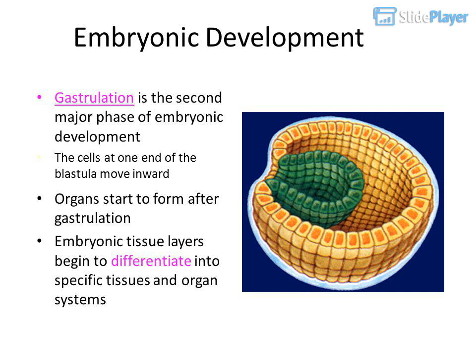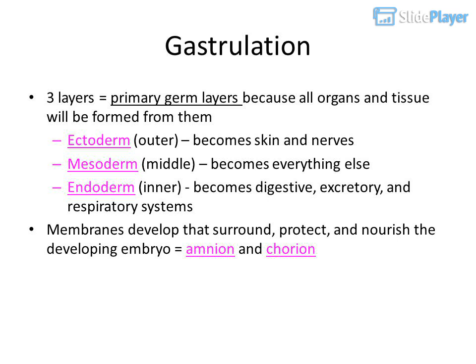Gastrulation is the second major phase of embryonic development. The cells at one end of the blastula move inward and organs start to form. After gastrulation, embryonic tissue layers begin to differentiate into three primary germ layers, from which all organs and tissues will form: ectoderm (outer) becomes skin and nerves; mesoderm (middle) becomes everything else; endoderm (inner) becomes digestive, excretory, and respiratory systems. Membranes also develop that surround, protect, and nourish the developing embryo — the amnion and chorion.